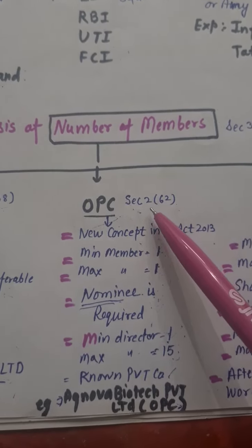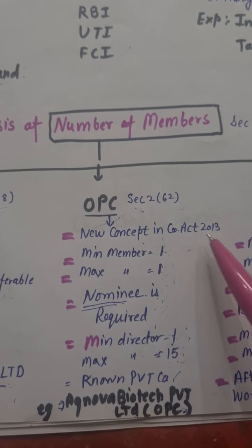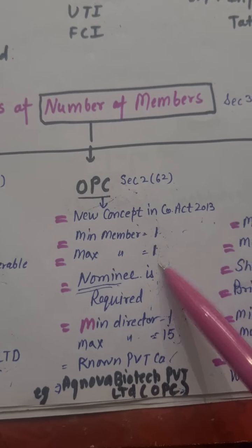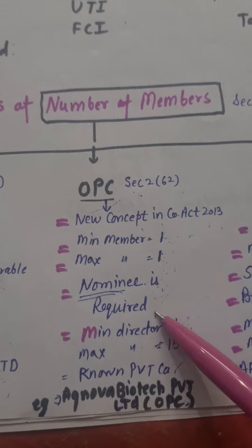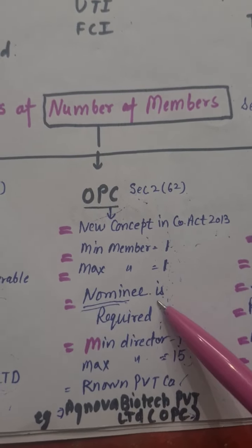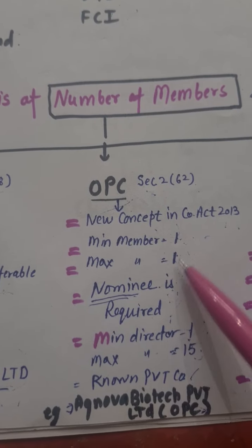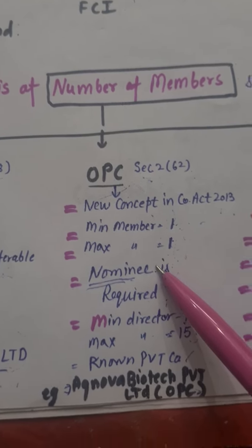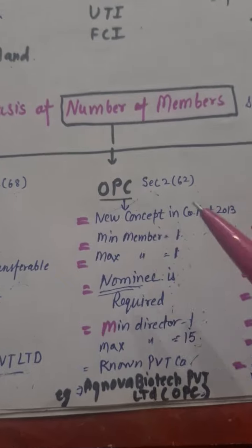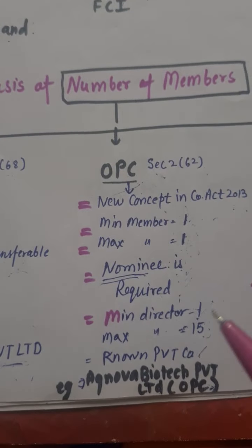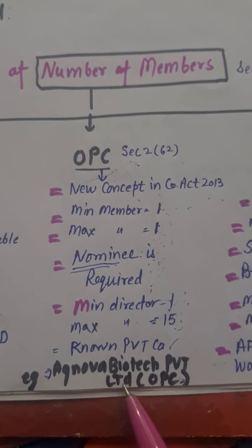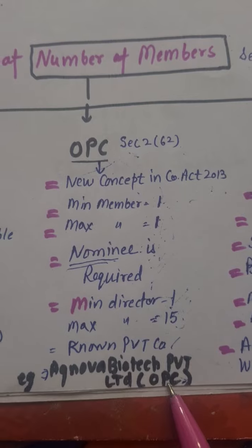Now let's look at OPC — One Person Company. It is defined under Section 2(62) and is a new concept introduced in the Companies Act 2013. The minimum number of members is 1. A nominee is required for OPC. Minimum directors is 1 and maximum directors is 15. It is considered as a private limited company. For example, Agnova Biotech Private Limited.